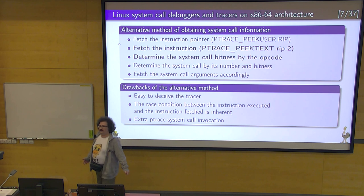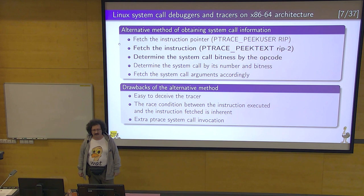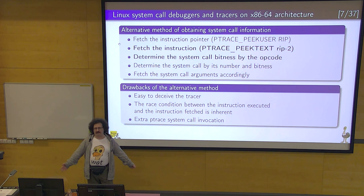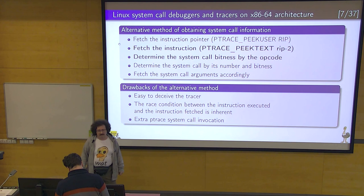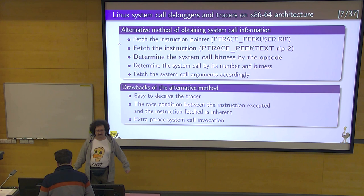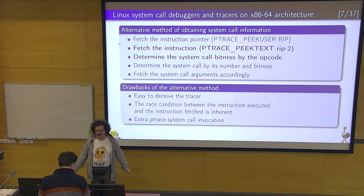So what are the alternatives? What could user space tracers do? There is an alternative method of obtaining system call information: you know the address of the instruction pointer, you can step two bytes back and fetch from that address the instruction that was used to invoke the system call, and then decide based on the opcode what was the bitness of the system call.